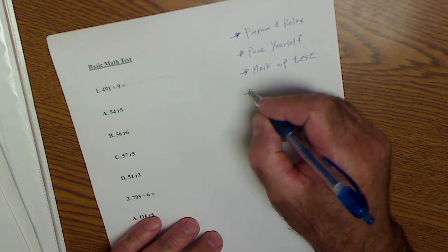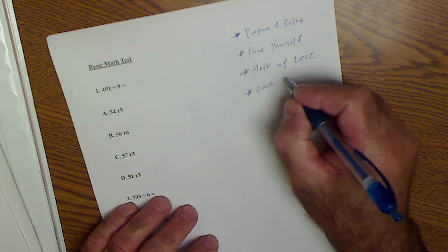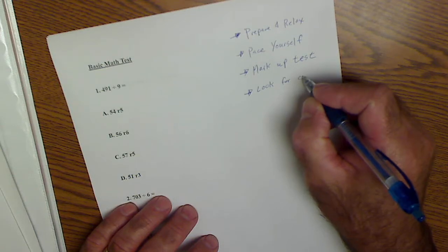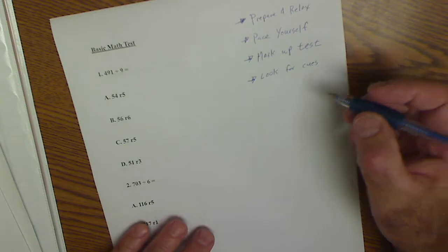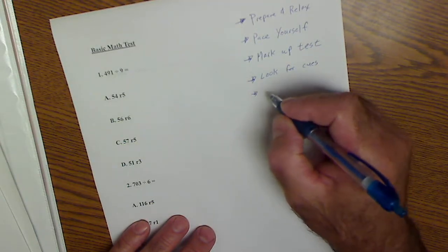Look for cues. On this basic test there's not too many cues. What are they trying to ask? Is it place value?